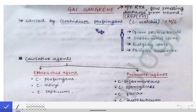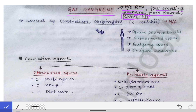Our next topic is gas gangrene. For gas gangrene, they will give you a clinical scenario — most commonly a history of a road traffic accident with a foul-smelling discharge plus crepitus. Once you see the word 'crepitus' in the question, you can be sure it is gas gangrene. This is asked as a clinical scenario-based question, so be very careful.